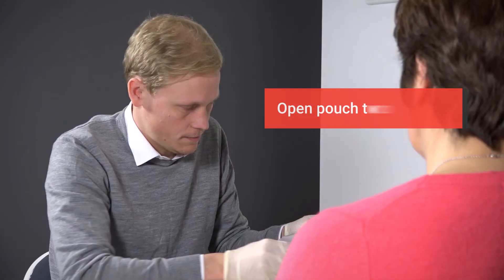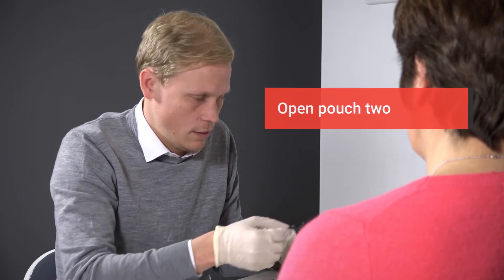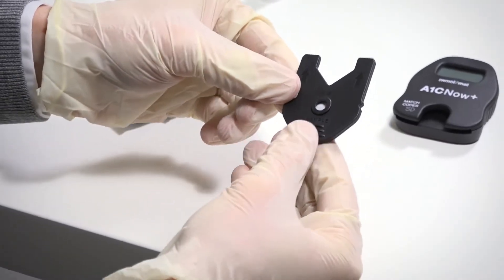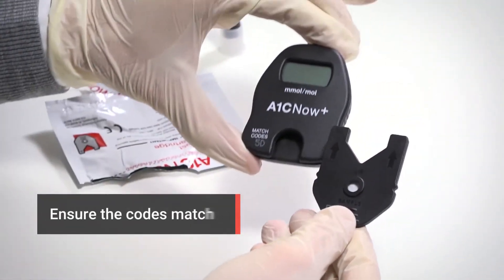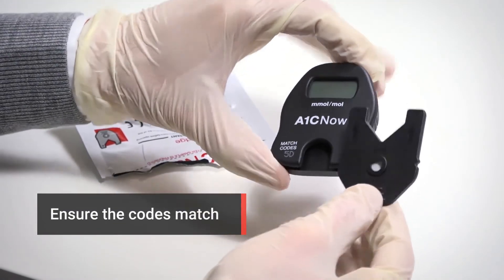Open pouch number two and remove the cartridge inside. Ensure the codes match on the cartridge and analyzer, and insert the cartridge until you hear it click.